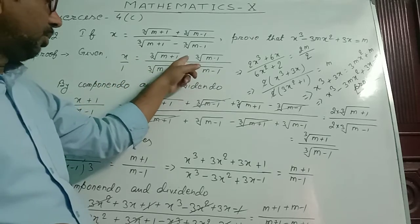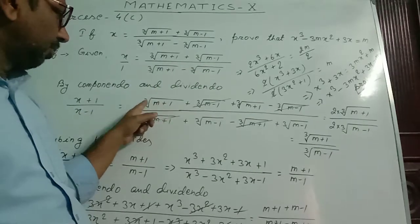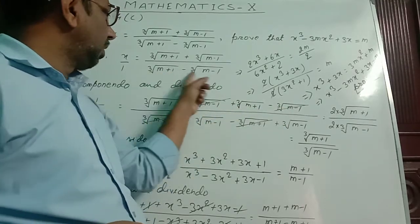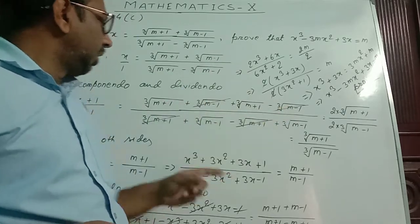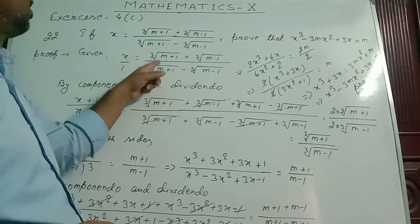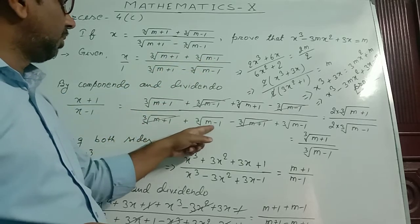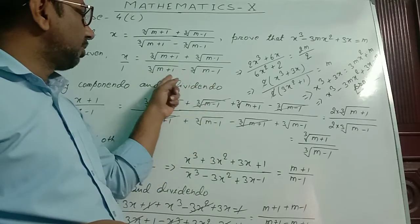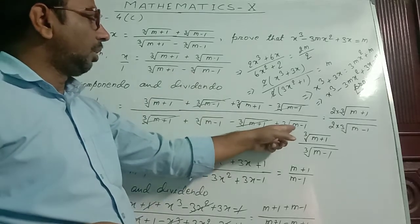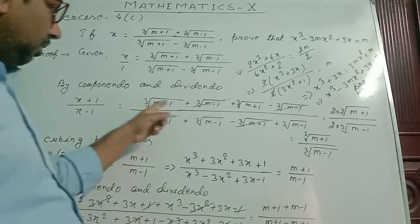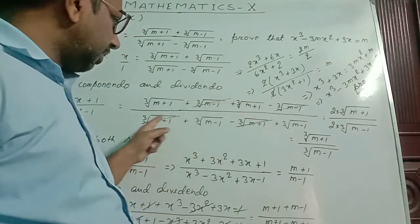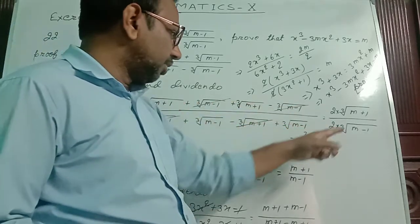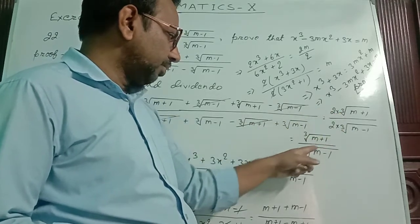Similarly, the denominator is added to the numerator: cube root of m plus 1 plus cube root of m minus 1 plus cube root of m plus 1 minus cube root of m minus 1. And for the subtraction part: cube root of m plus 1 plus cube root of m minus 1 minus cube root of m plus 1 plus cube root of m minus 1. The plus and minus terms cancel on each side, leaving 2 into cube root of m plus 1 by 2 into cube root of m minus 1. The 2's cancel, giving cube root of m plus 1 by cube root of m minus 1.